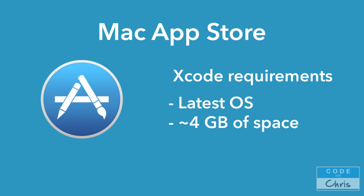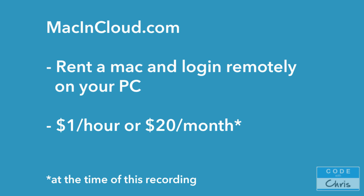For PC users or people who can't get access to a Mac, what's the solution? Well, you could invest in a Mac, or you can try out a service like macincloud.com, which allows you to rent a Mac and remotely log in to that Mac from your PC. It's somewhere around $1 an hour or $20 a month for unlimited usage. Keep in mind that these prices may have changed. But if you don't already have access to a Mac, it's still a pretty low-cost investment to get your feet wet and see if app development is something you want to pursue. On your PC desktop, you're going to have a window of the Mac desktop and be able to access the Mac remotely through that.